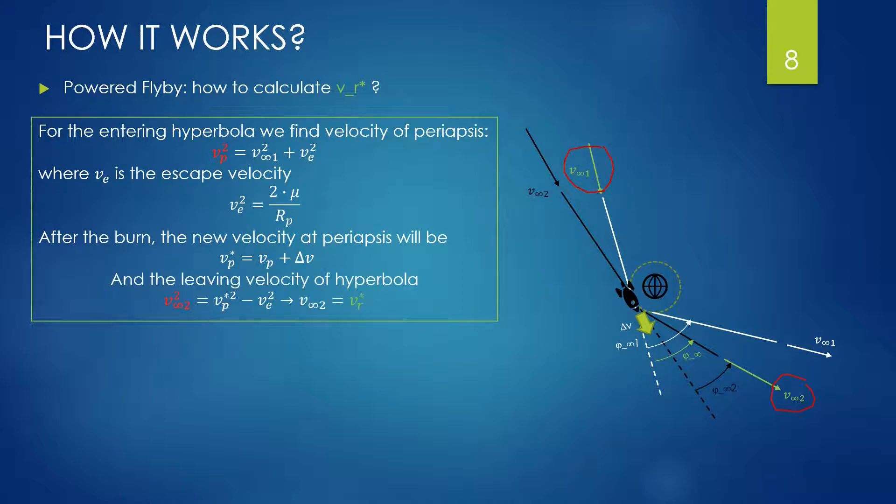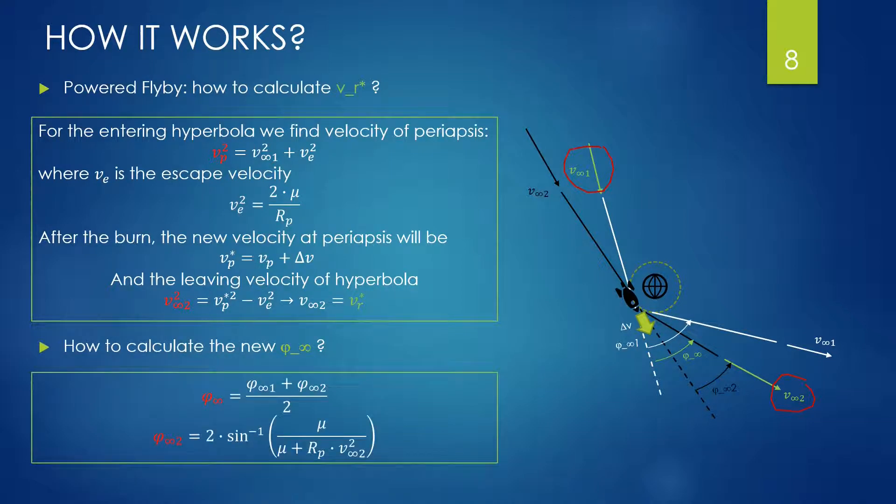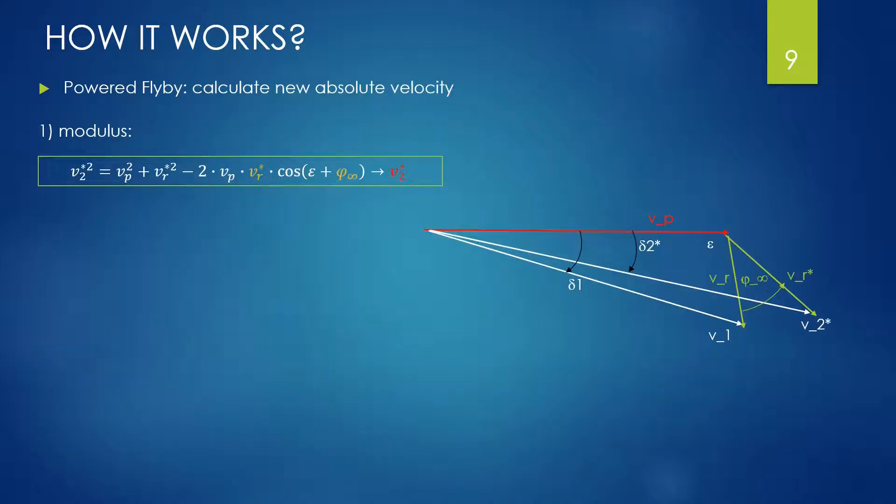Now the leaving velocity V-infinite2 is given by Vp star squared minus escape velocity squared. The same expression used above, but solved for V-infinite2. We still need the new angle V-infinite. This angle is the mean between the entry and leaving V1 and V2. We know already the expression to find it, so we apply the same formula seen before for the second angle by inputting this time the new value, the V-infinite2. By means of the leaving V-infinite, we can calculate now the absolute velocity, which is our target.